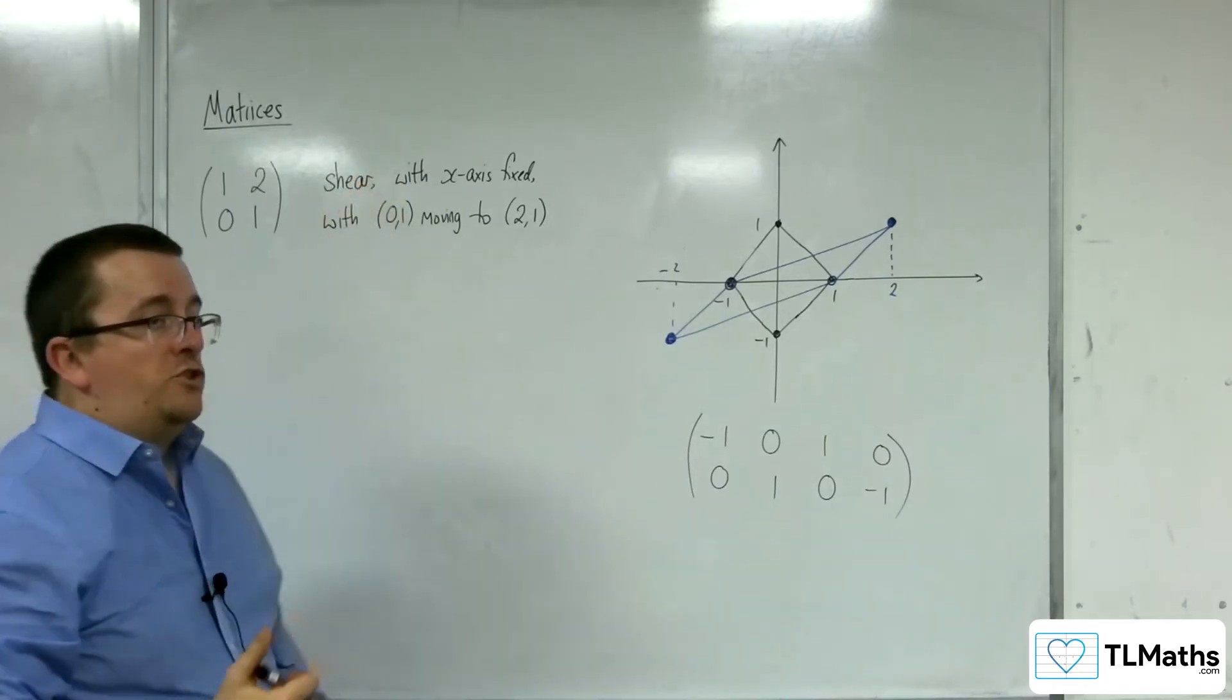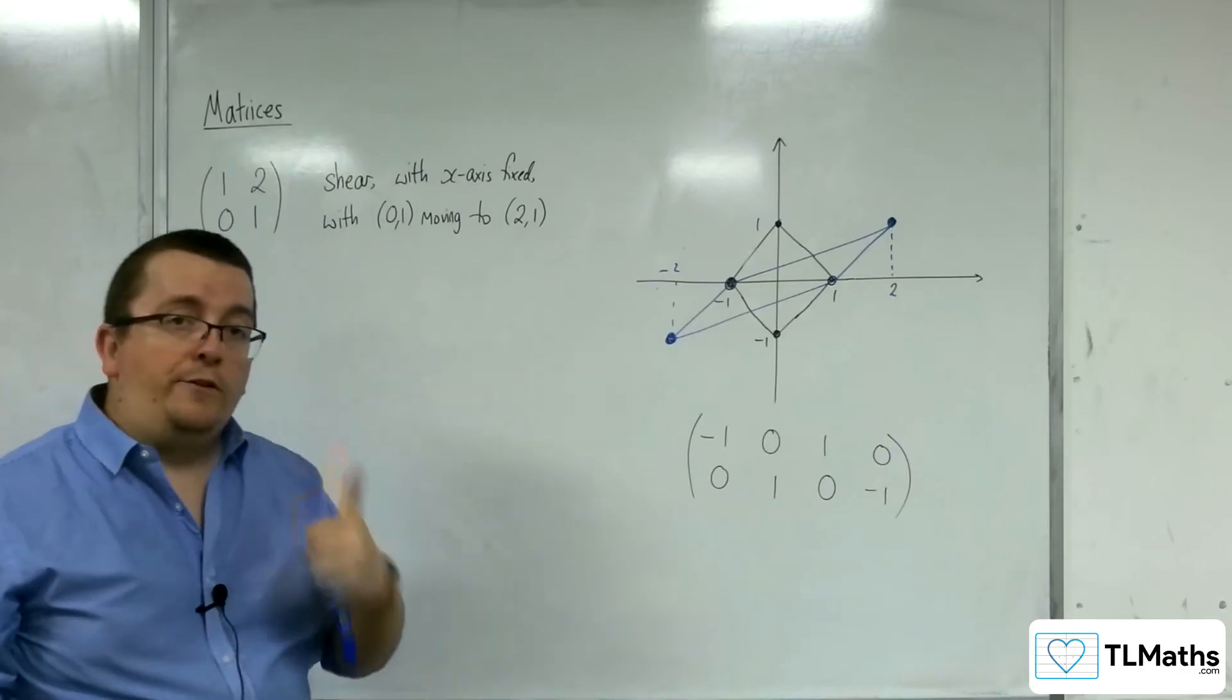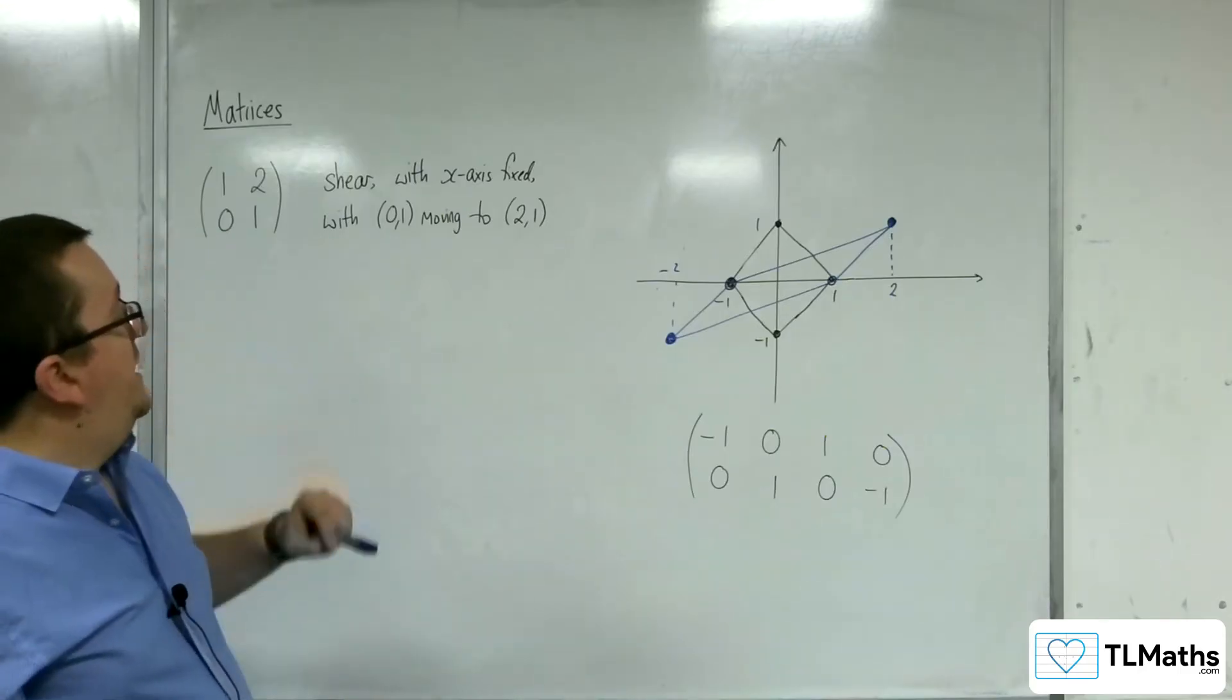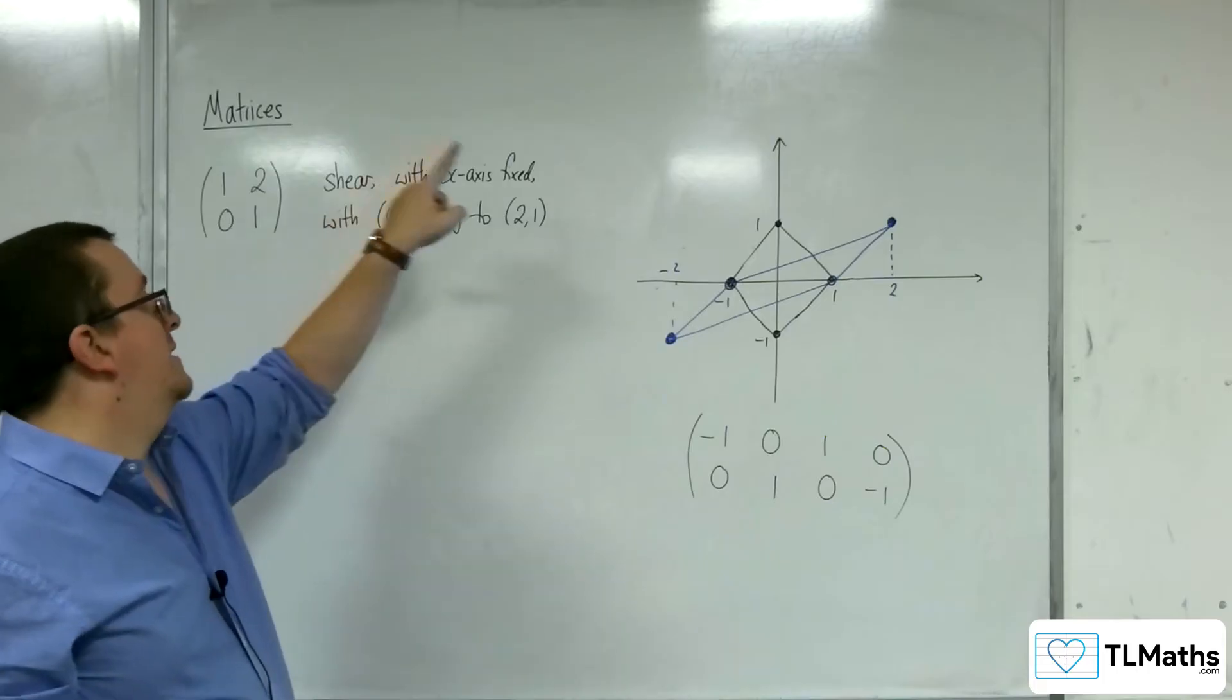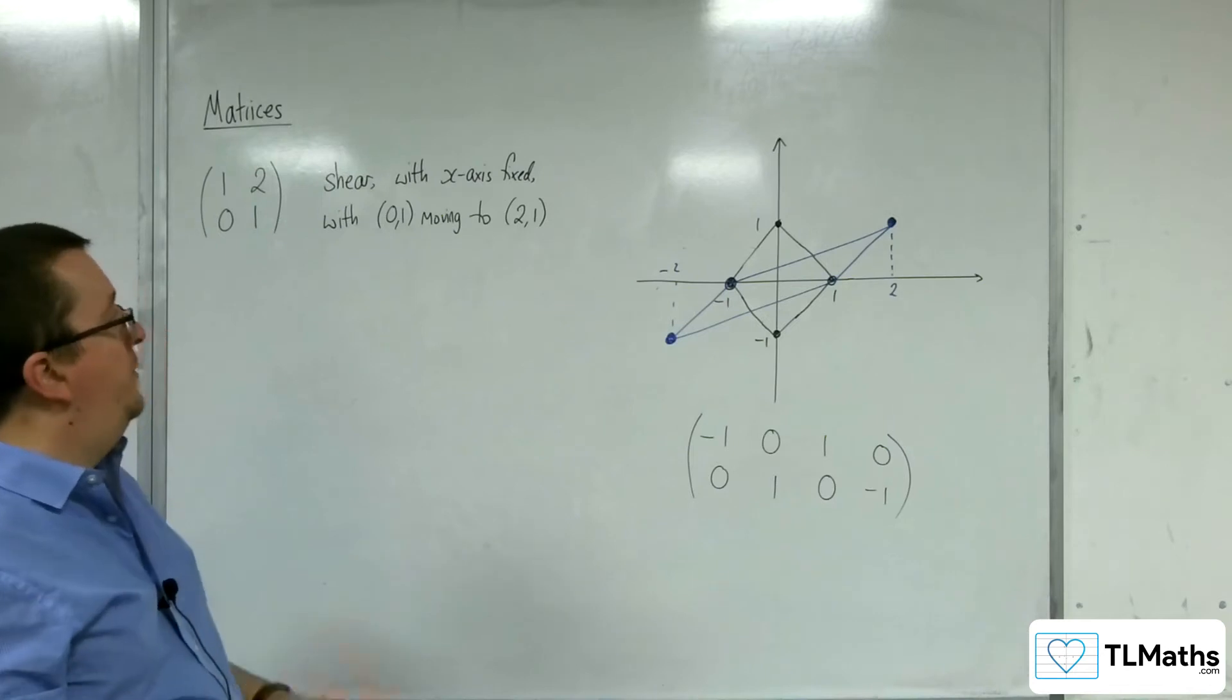Moving or mapping to 2, 1. So we describe it as the shear. We identify that the x-axis has remained fixed. And we have identified a coordinate not on the x-axis moving to another point. And that describes the shear.